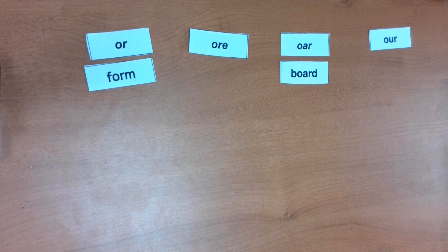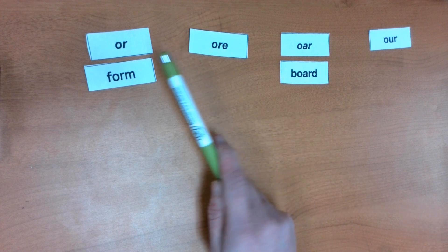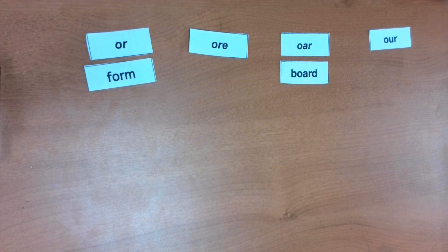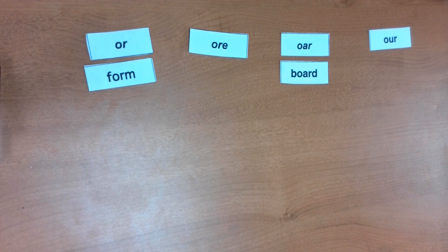Hi guys, today we're going to be taking a look at more R-influenced syllable types with an O vowel sound. We have a lot of variety of patterns with this word sort, making these words much easier to read than they are to spell.